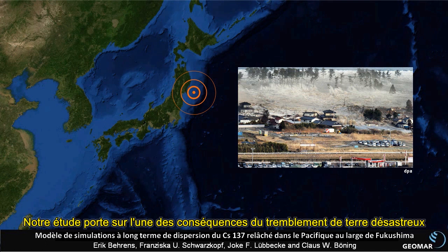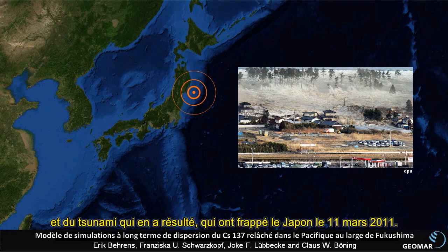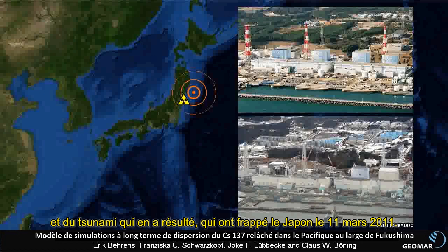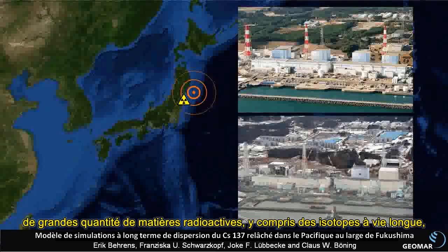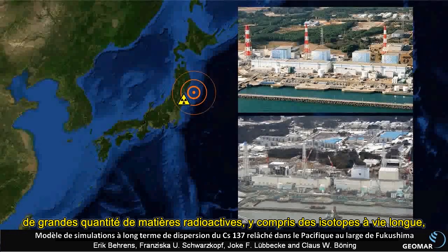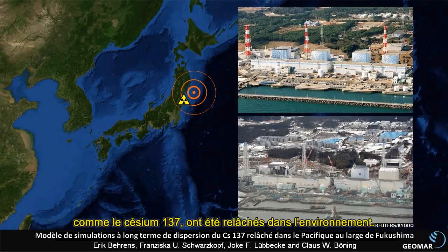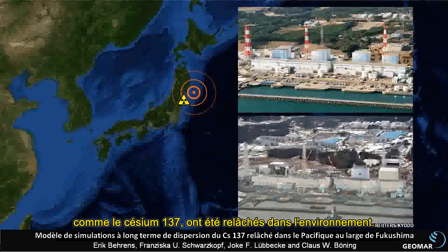Our study deals with one of the consequences of the disastrous earthquake and subsequent tsunami that hit Japan in March 2011. Caused by the explosions and meltdowns in the Fukushima Daiichi nuclear power plants, large amounts of radioactive material, including long-living isotopes such as cesium-137, were released into the environment.